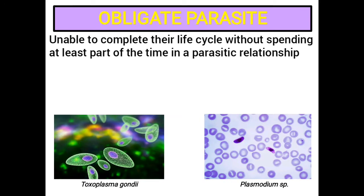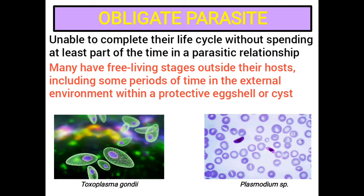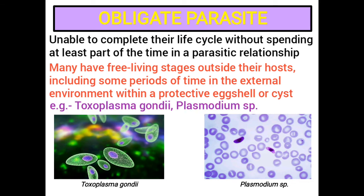Obligate parasites: These are parasites that are unable to complete their life cycle without spending at least part of the time in a parasitic relationship. However, many obligate parasites have free-living stages outside their hosts, including some periods of time in the external environment within a protective egg, cell, or cyst. Examples include Toxoplasma gondii, Plasmodium, etc.